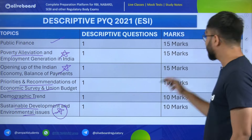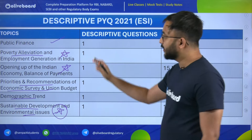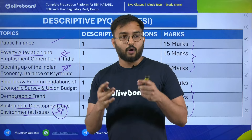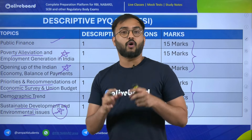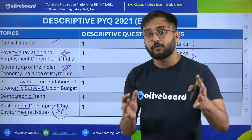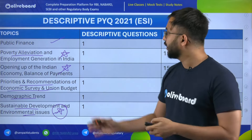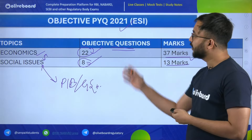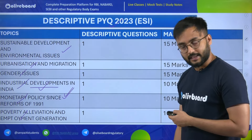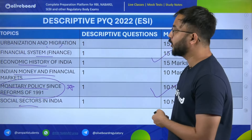A good example: in the last three years' previous year questions, there is always a question on an international organization — it may be WTO or IMF. So you can pick such topics based on previous year questions and prepare for them. This is the best way of preparing for descriptive answers. Now, this is the TOC for ESI — these are all the topics.